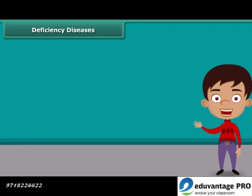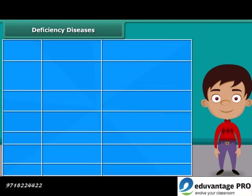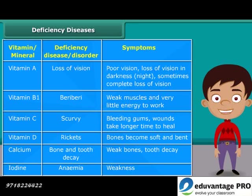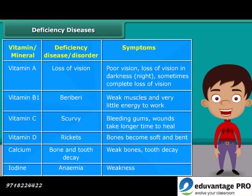After knowing about balanced diet, we should also know that if we don't take a proper diet, what problems can arise. Deficiency diseases are the diseases that occur due to lack of nutrients over a long period of time. Here is a list of some of the deficiency diseases and their symptoms.